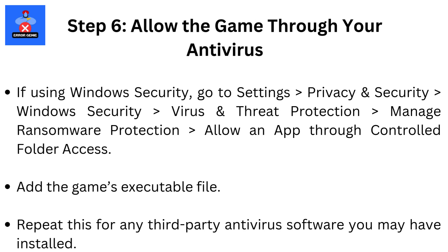Step 6: Allow the game through your antivirus. If using Windows Security, go to Settings, then Privacy and Security, then Windows Security, then Virus and Threat Protection, then Manage Ransomware Protection. Then allow an app through controlled folder access and add the game's executable file. Repeat this for any third-party antivirus software you may have installed.